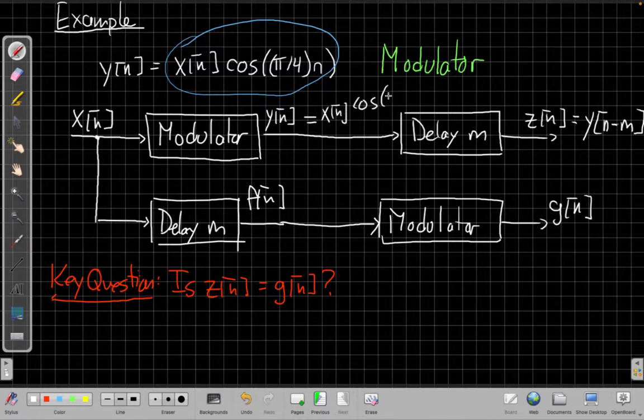Right so when I do that I could say I know this is x[n] cosine pi over 4n.